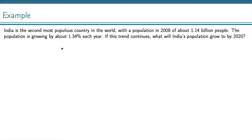Using an exponential growth model, we have p sub n equals p0 times 1 plus r to the n. The initial amount in 2008 is 1.14 billion. r, the growth rate, is 1.34%, so that's 0.0134 to the n. So this is our exponential growth model.